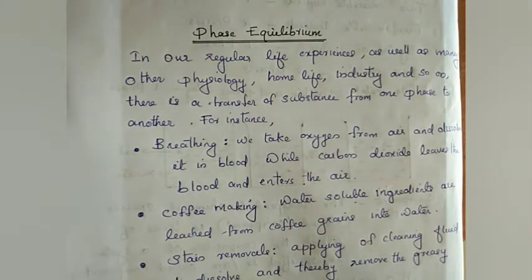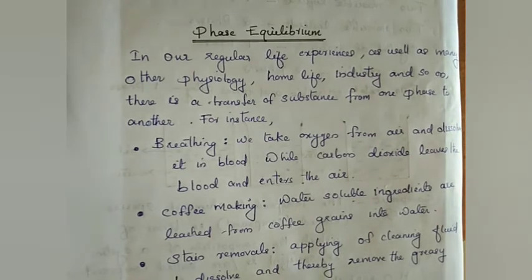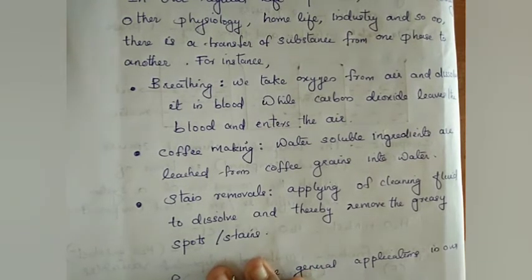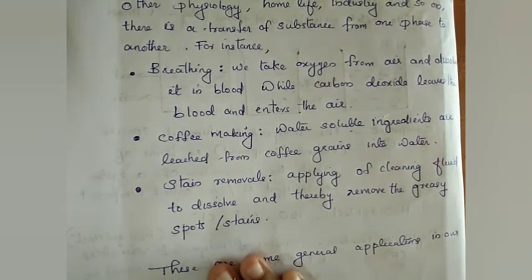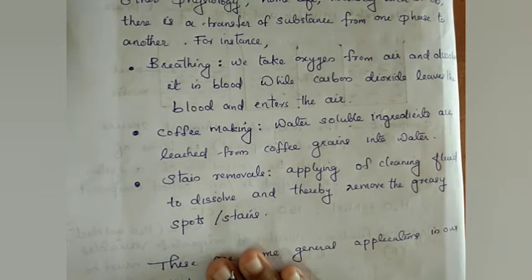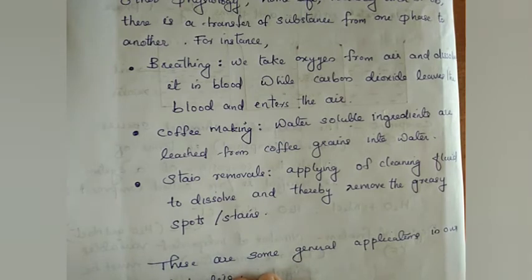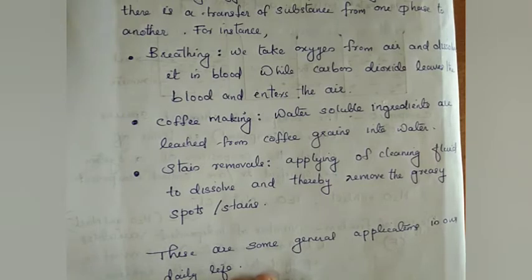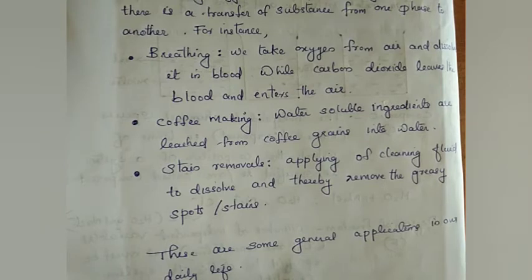Let us take some daily life examples of two phases in contact. First, breathing: we take oxygen from air and dissolve it in blood, while carbon dioxide leaves the blood and enters the air. Second, coffee making: water-soluble ingredients are leached from coffee grains into water. Third, stain removal: applying cleaning fluid to dissolve and thereby remove greasy spots or stains. These are examples of two phases in contact with exchange of substance.